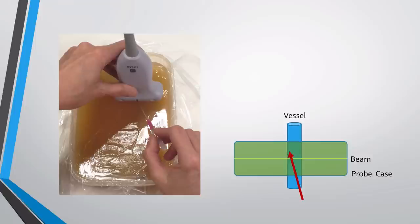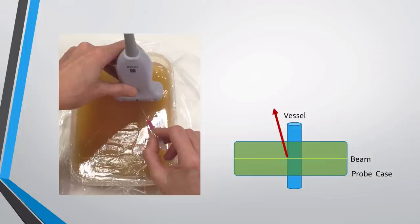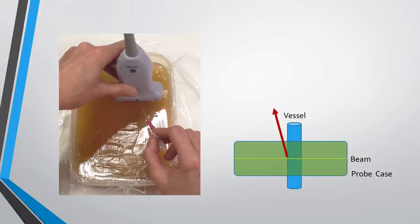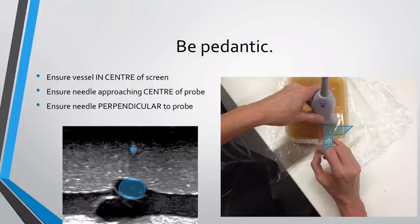Most of us who teach ultrasound-guided cannulation emphasize the necessity to line everything up ahead of time — to place the screen in your direct line of sight, looking along your needle straight at the probe. But even when you line all these things up it's still possible not to hit the target. This happens when your needle is not perfectly 90 degrees to the probe cover. In summary, to avoid malalignment errors: prepare things ahead of schedule, scout, line yourself up carefully, be pedantic about having the vessel in the center of your screen, your needle approaching the center of your probe face, and the needle perpendicular to the probe.